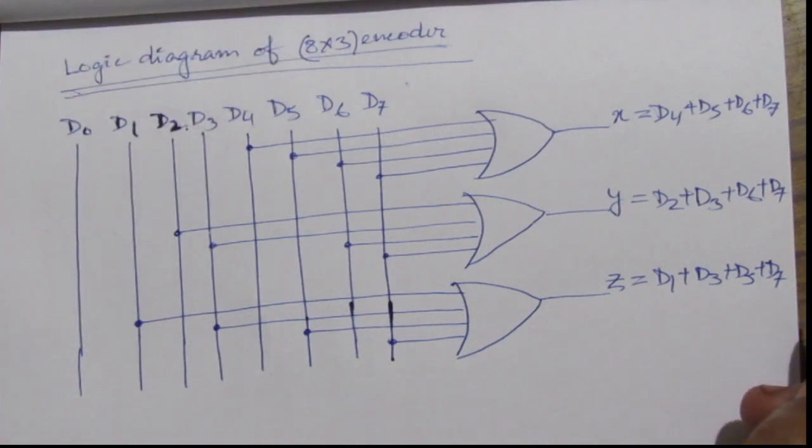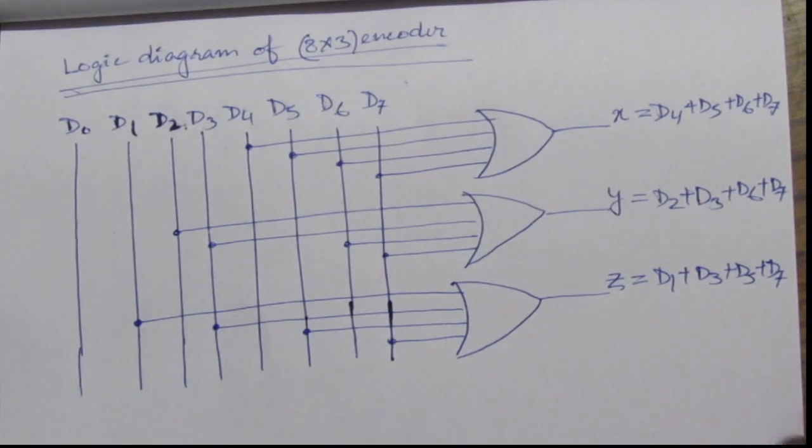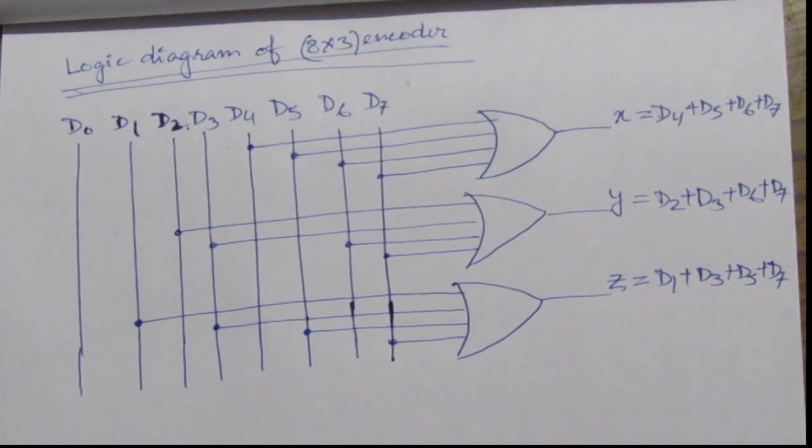So, this is the logic diagram of octal to binary encoder or 8 to 3 encoder. Please like, share and subscribe to my channel. If you have any doubt, put in the comment section below. Thank you.